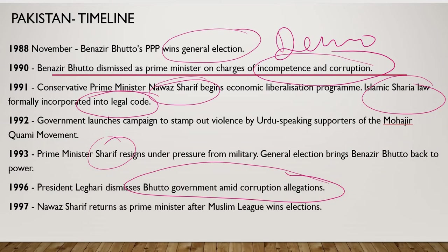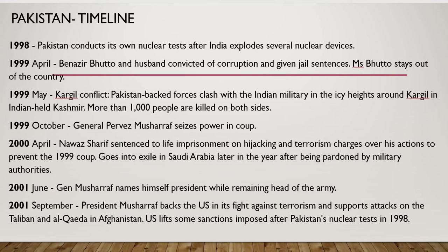Muslim League won again in the fake elections and Nawaz Sharif again became Prime Minister in 1997. In 1998, when India conducted nuclear tests, Pakistan followed suit and also conducted nuclear tests. Corruption cases were brought against Bhutto, who fled the country to Europe. In 1999, India and Pakistan had another conflict — the Kargil War — where Pakistani forces intruded into Indian territory. Though many brave soldiers from both sides died, India was ultimately able to push them back to the Line of Control.